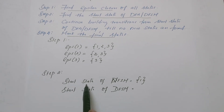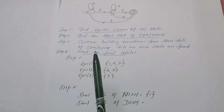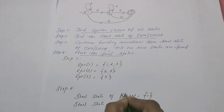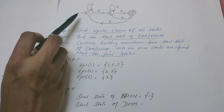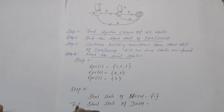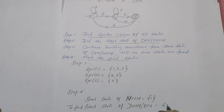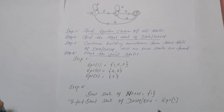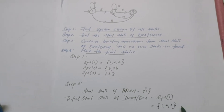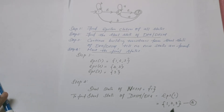Now we move to Step 2: find the start state of the DFA. We consider the start state of the NFA, which from the transition diagram we know is state 1. The start state of the DFSM is the Epsilon closure of the start state of the NFA. We already identified Epsilon closure of 1 as {1, 2, 3}. For convenience, I call this state A. So the start state of the DFA is A.